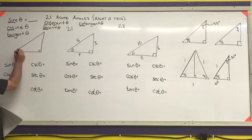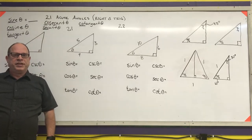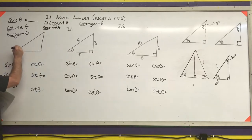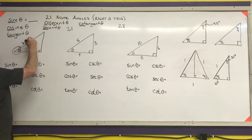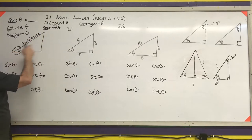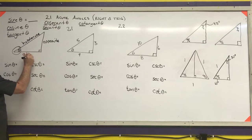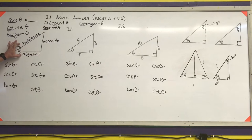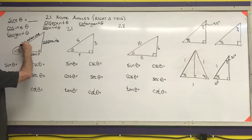For a right triangle, we're talking about a specific angle. The first thing you need to always do when doing right triangle trig is figure out which angle you're talking about — I have my geometry class circle it so we know which one it is — and then we label our triangle by sides. The first side we label is the hypotenuse, which is the side opposite the right angle. Then the side opposite the angle of interest is the opposite side, and the last side is the adjacent side.